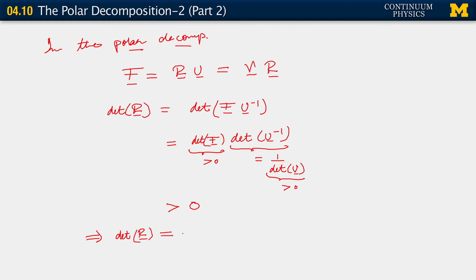In fact, determinant of r is equal to 1. In this particular case, the particular rotation tensor belonging to SO3, which shows up in the polar decompositions, has determinant equal to 1.